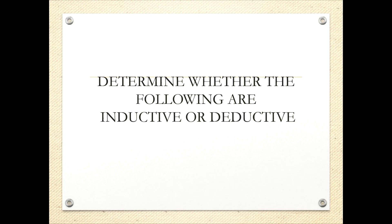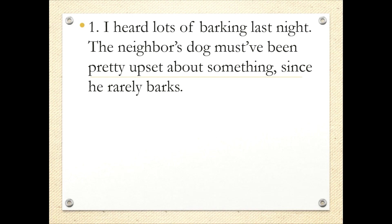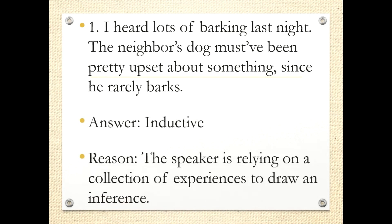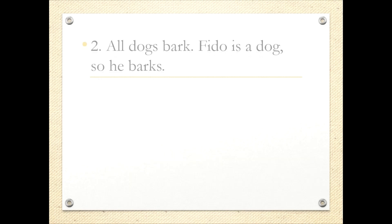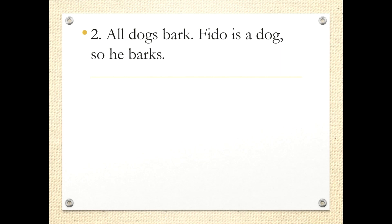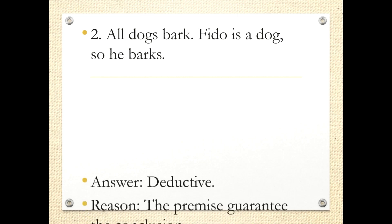Determine whether the following are inductive or deductive. Number 1: I heard lots of barking last night — the neighbor's dog must have been pretty upset since he rarely barks. This is inductive: the speaker is relying on a collection of experiences to draw an inference. Number 2: all dogs bark; Fido is a dog, so he barks. This is deductive — the premise guarantees the conclusion, from general to specific.